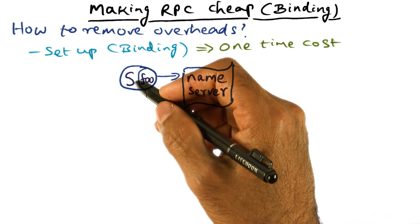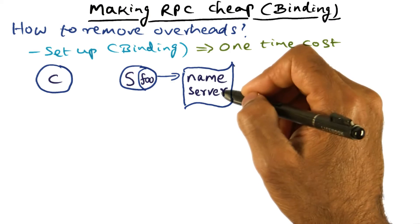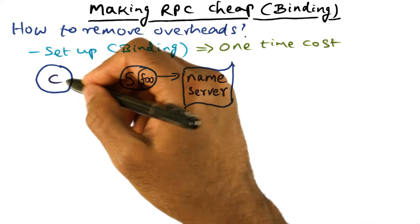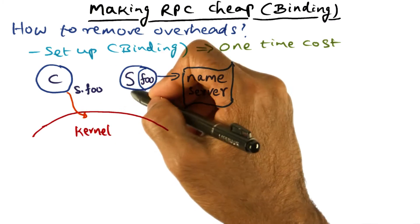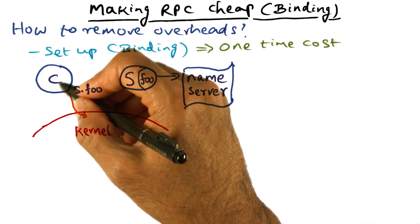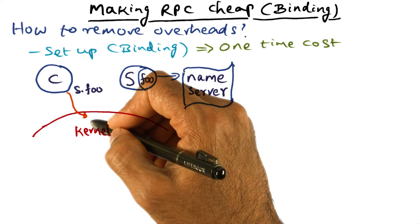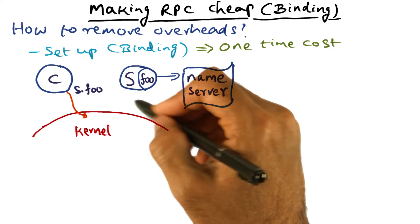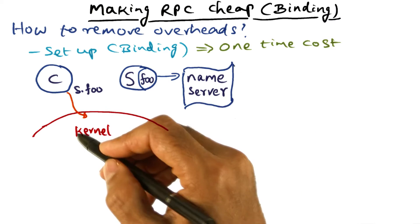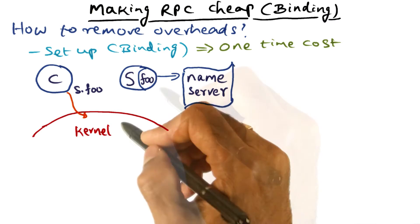At this point the server is waiting for bind requests to come from the kernel. The client looks up the name server and finds that S has an entry point called foo — an entry point available for the client to call. So the client issues the call S.foo, meaning it wants to execute procedure foo on server S. That's the RPC call the client is making for the first time, and this results in a trap into the kernel. The kernel doesn't know whether the server is willing to accept calls from this client or not.